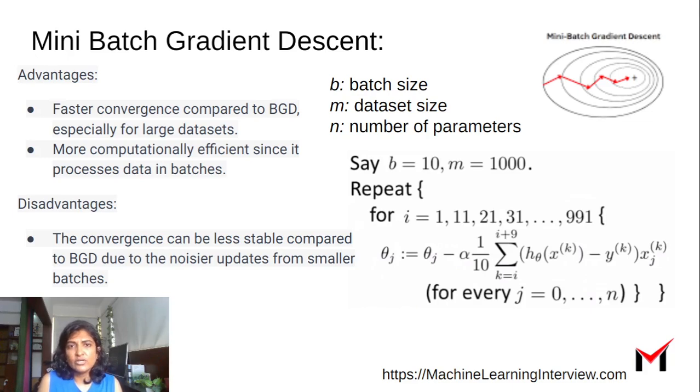So this leads to faster convergence compared to batch gradient descent, especially for large datasets. And it's more computationally efficient since it processes data in batches. So what you're seeing here is the mini-batch size is let's say B. So you're actually adding over all the examples instances in the mini-batch to compute your gradient.